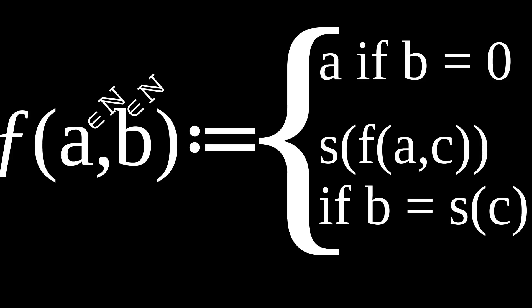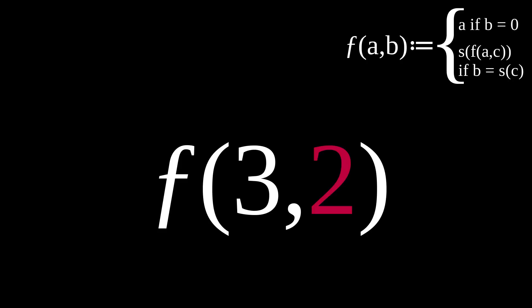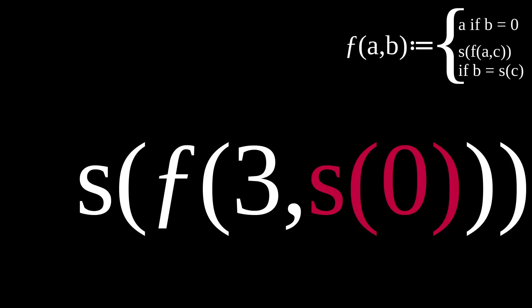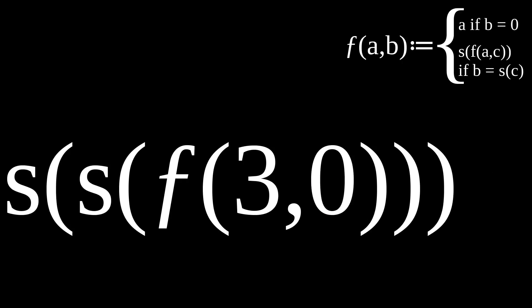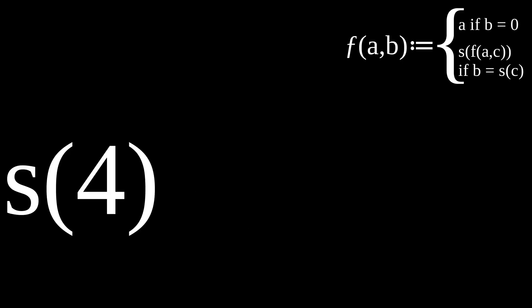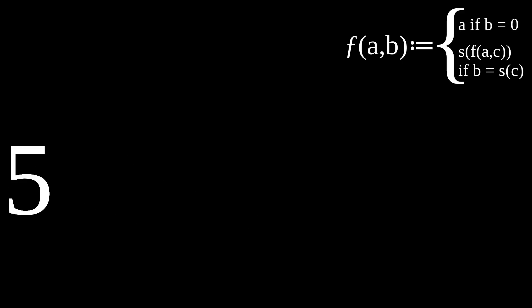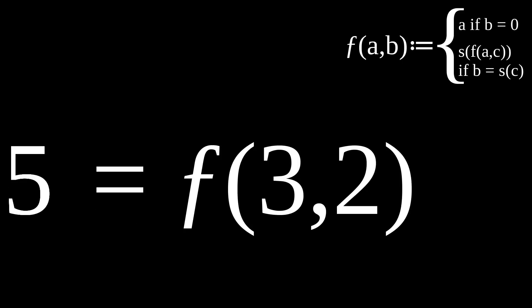An example could do. Consider f of three and two. Two is s of one, which means this is s of f of three and one by our definition, and one is s of zero, so this is s of s of f of three and zero, which according to our definition is just three. s of s of three is s of four, and finally s of four is five.